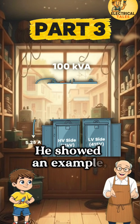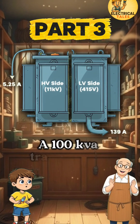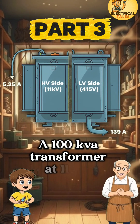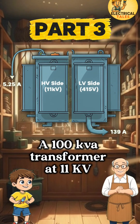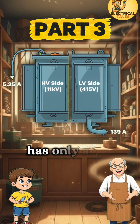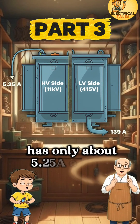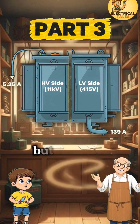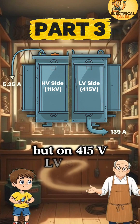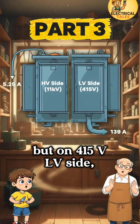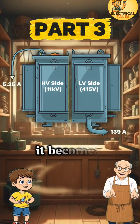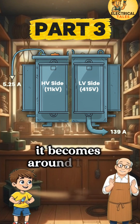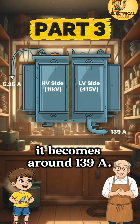He showed an example: a 100 KVA transformer at 11 KV has only about 5.25 A on the HV side, but on the 415 V LV side, it becomes around 139 A.